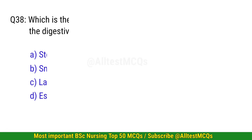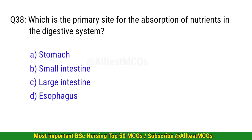Question 38. Which is the primary site for the absorption of nutrients in the digestive system? The correct option is B: Small intestine.